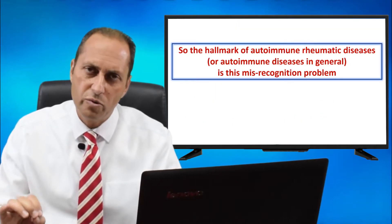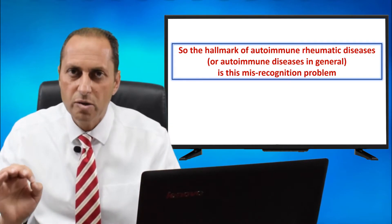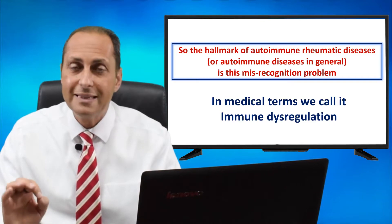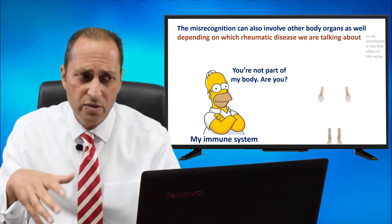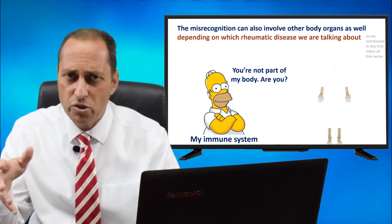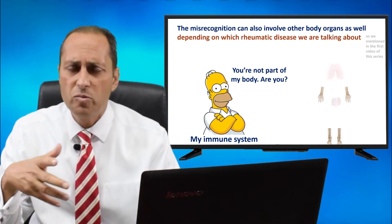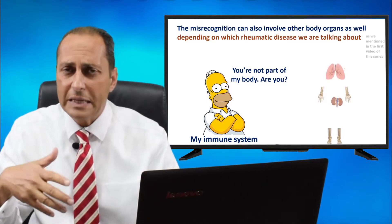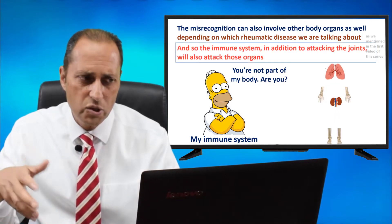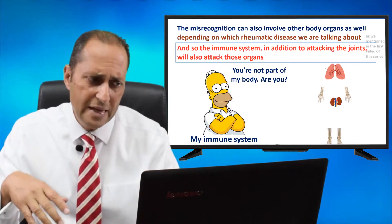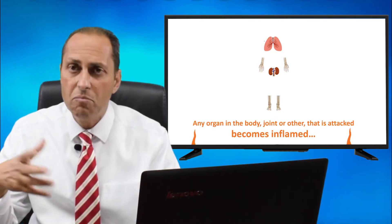So the hallmark of autoimmune rheumatic diseases — or autoimmune diseases in general — is this misrecognition problem. In medical terms, we call it immune dysregulation. This misrecognition can also involve other body organs depending on which rheumatic disease we are talking about, as mentioned in the first video of this series. In this model, for example, we assume the immune system cannot recognize the lung tissue and the kidney tissue in addition to the joints, so the immune system will attack those organs as well. Any organ — joint or otherwise — that is attacked by the immune system in this model becomes inflamed.